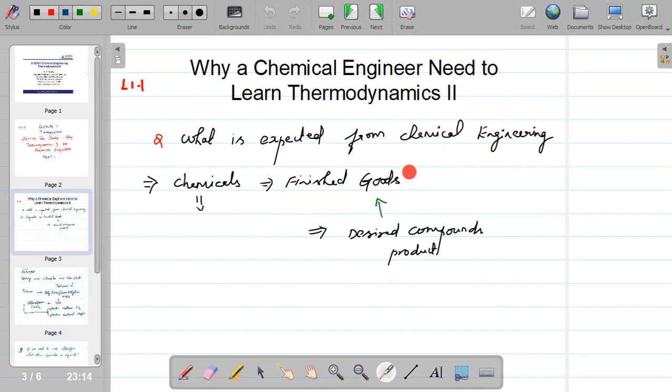Now these finished goods by themselves are not there. They are made from some compounds, from some chemicals. These chemicals themselves may not be available. They are made by something called raw materials. So raw materials are converted to compounds or products which are then transformed to finished goods.